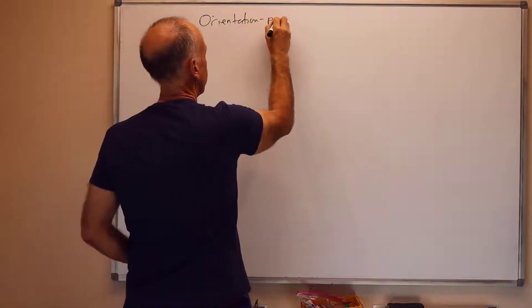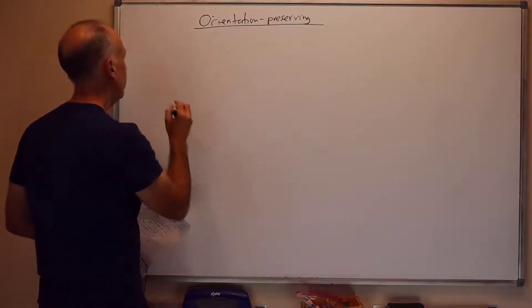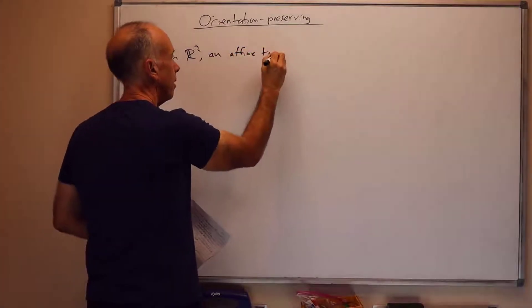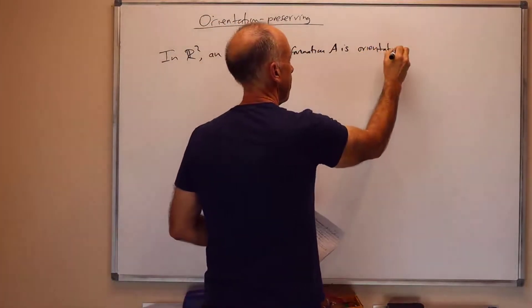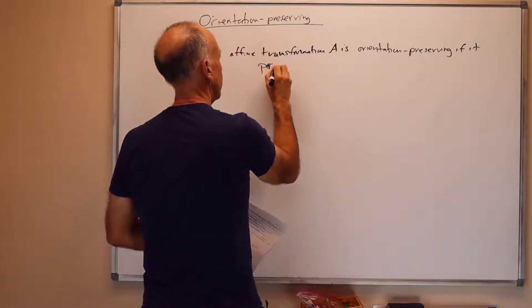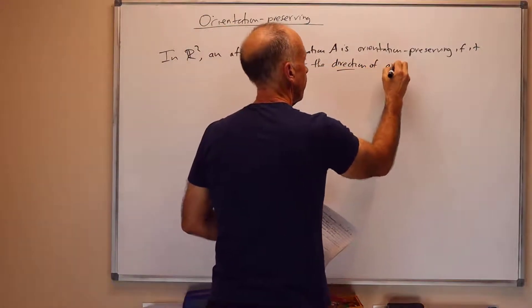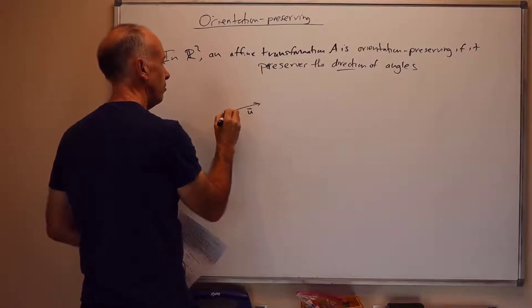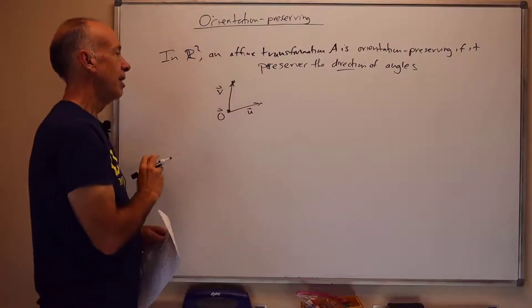Now I want to define orientation-preserving. They're really the same definitions, but I'll give the definition once in R2, and then again in R3. In R2, an affine transformation A is orientation-preserving if it preserves the direction of angles. What I mean by this is best represented just by a picture. Suppose I've got two vectors U and V. We think of them both rooted at the origin, and we look at the points U and V at the end of this.